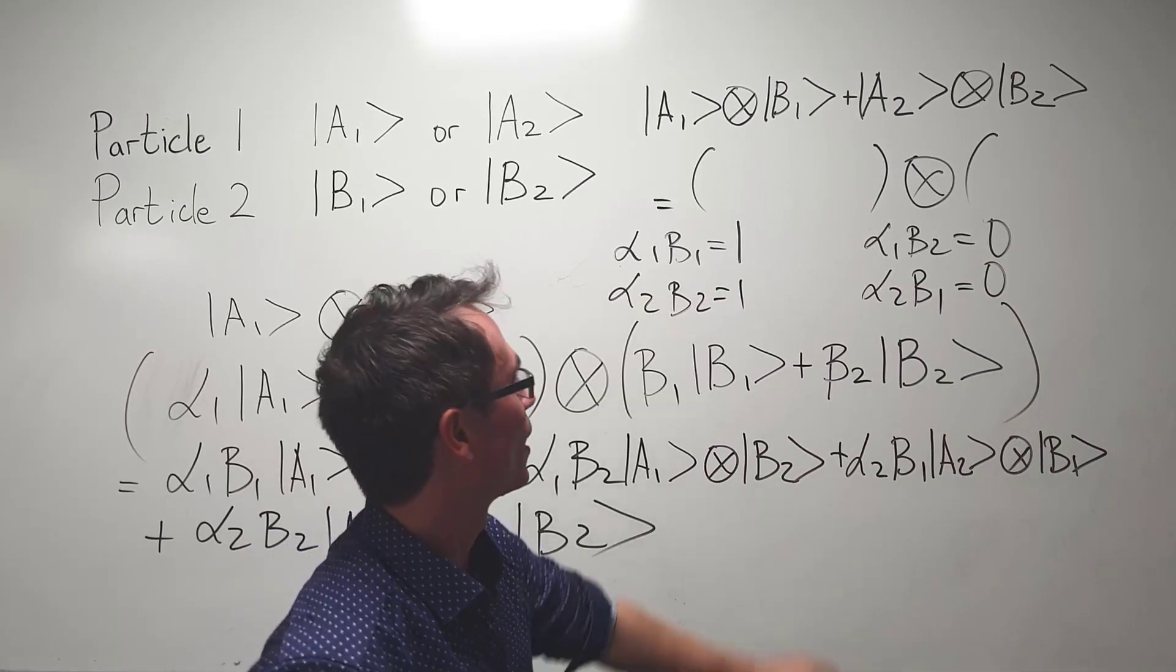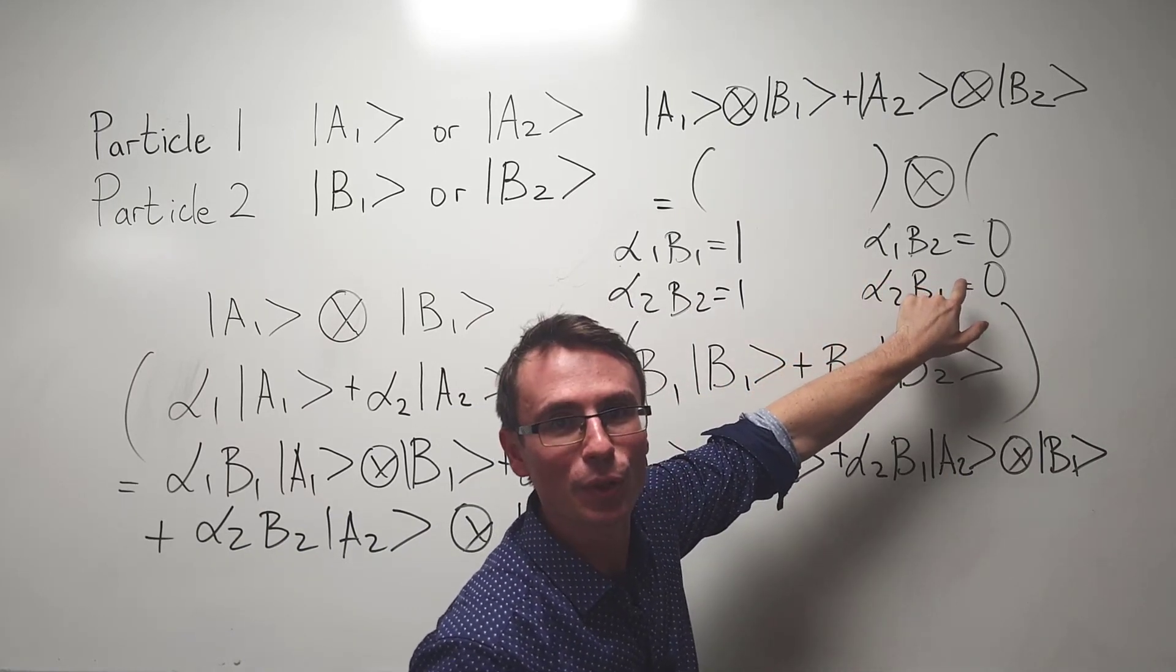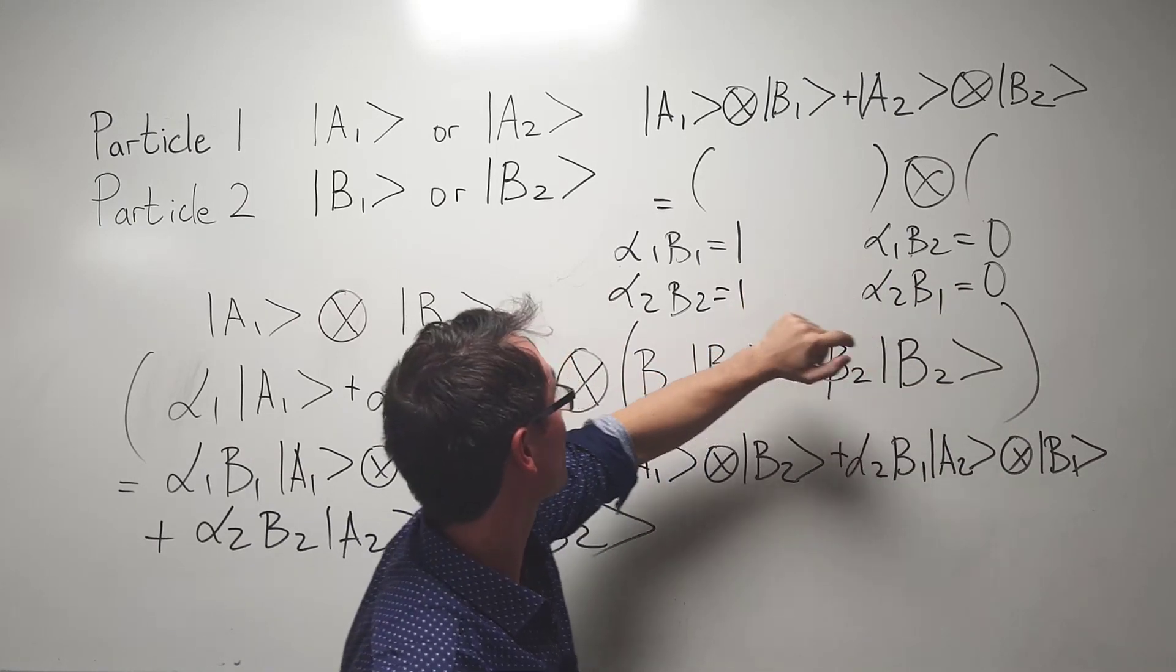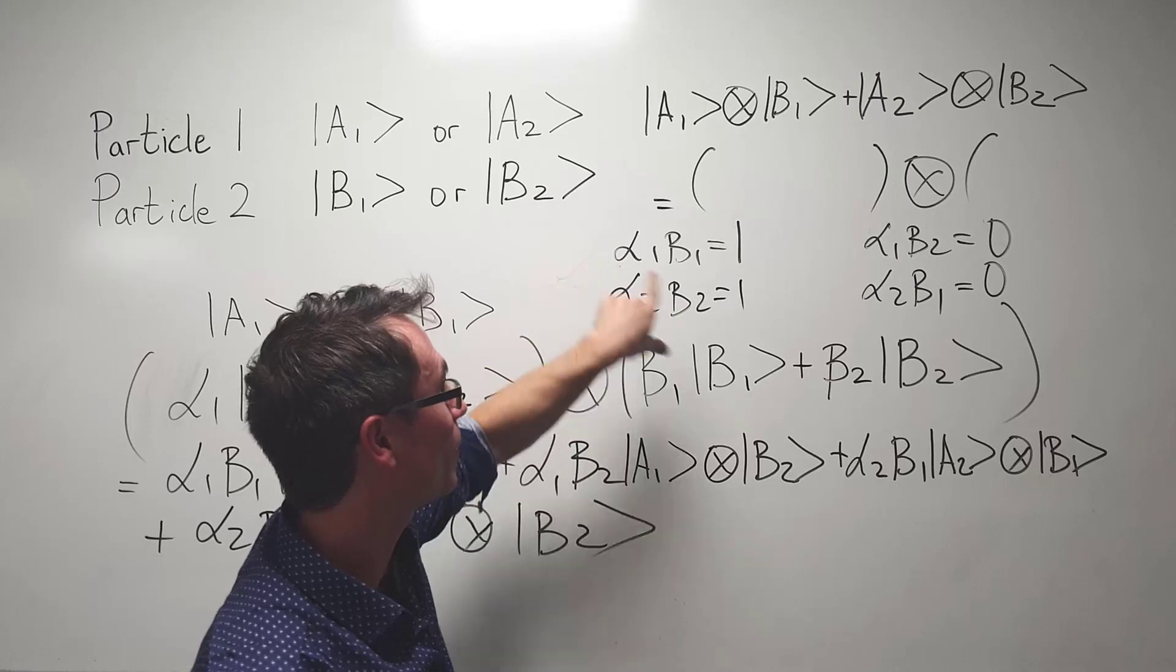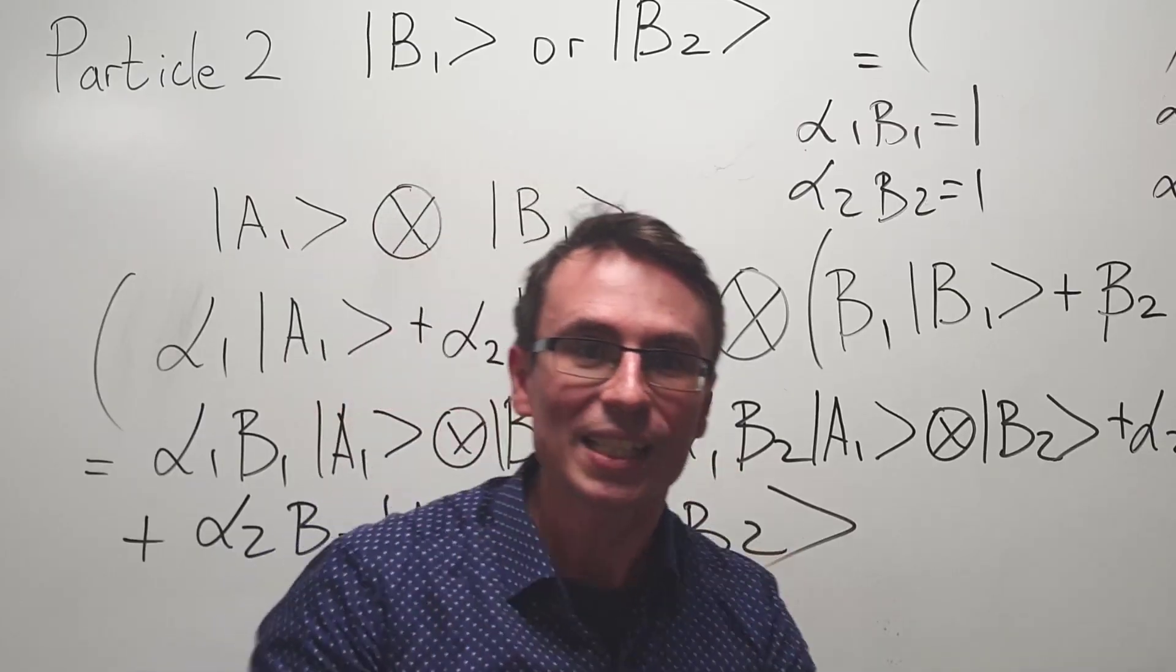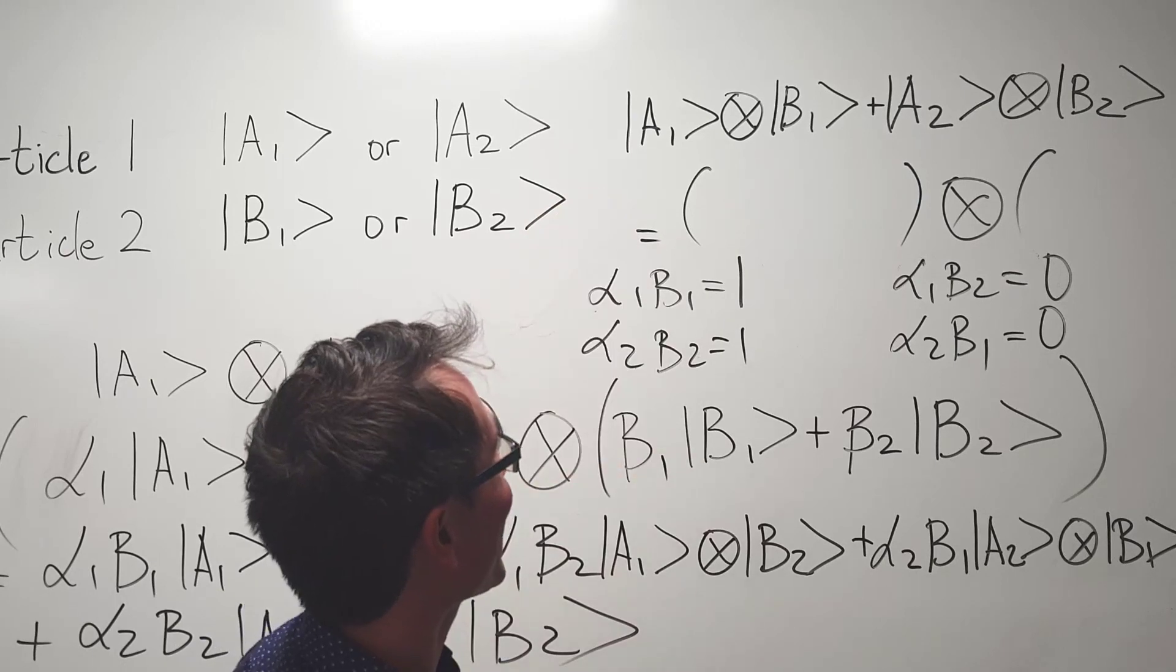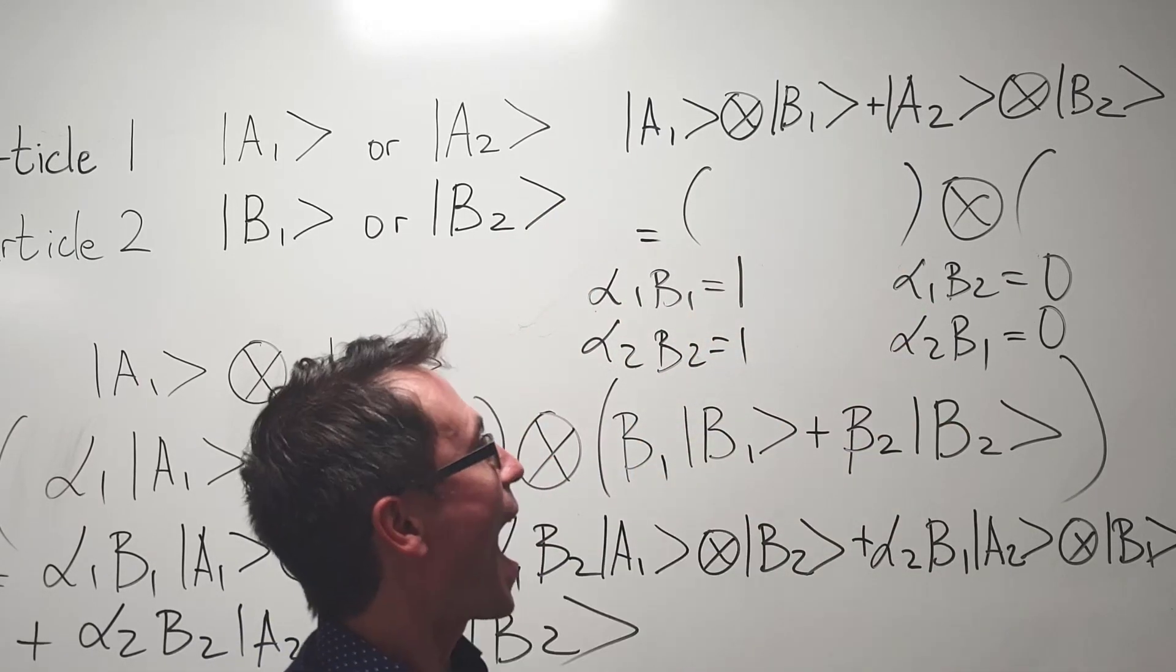This here is a contradiction. Look at this: alpha one beta two equals to zero. This means that either alpha one will be zero, in which case this coefficient has got to be zero as well, or if beta two is equal to zero then this coefficient here will have to be equal to zero. So this means that it's completely impossible to represent this state as something that is happening to particle one and something separate that is happening to particle two.